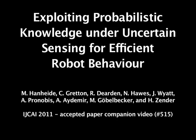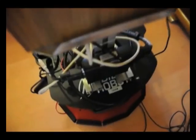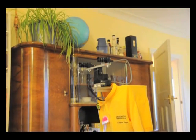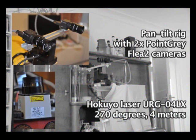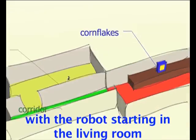Exploiting probabilistic knowledge under uncertain sensing for efficient robot behaviour. This is our robot DORA. DORA is a prototype of a domestic service robot. It is equipped with two FLEA2 cameras for image processing and a HOKUYO laser scanner for mapping and obstacle avoidance. In this video we illustrate how DORA can exploit probabilistic knowledge to search for objects in a home.